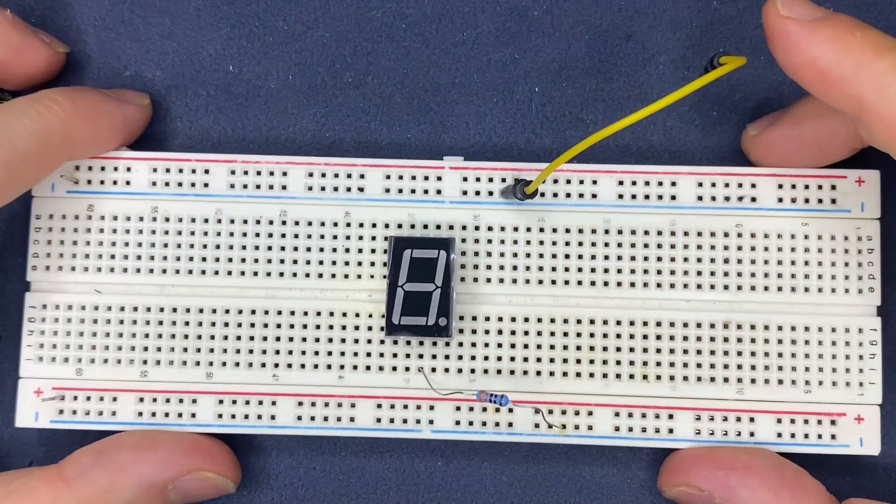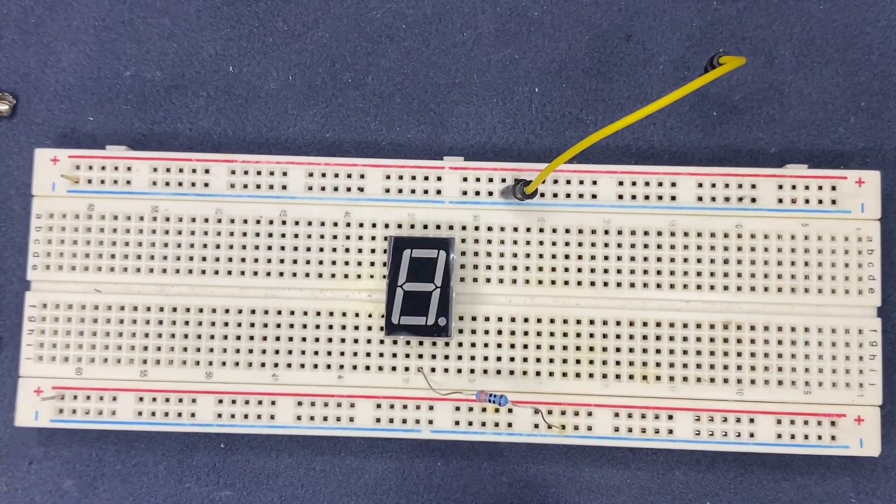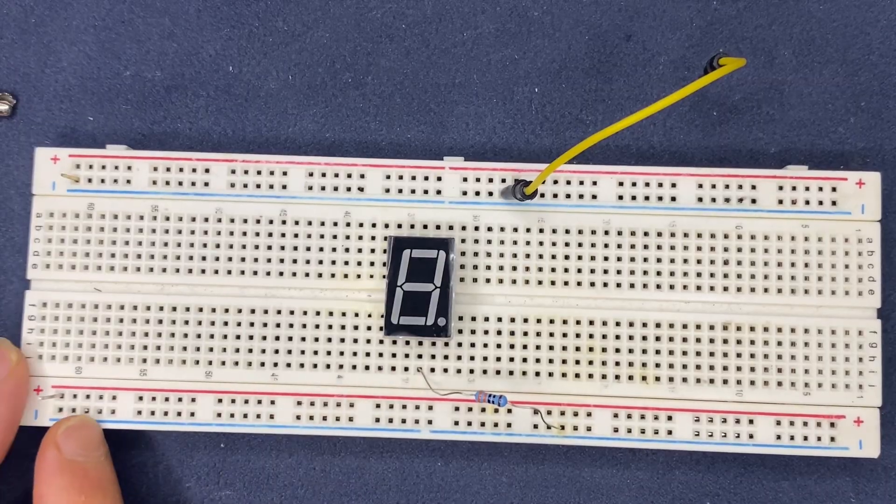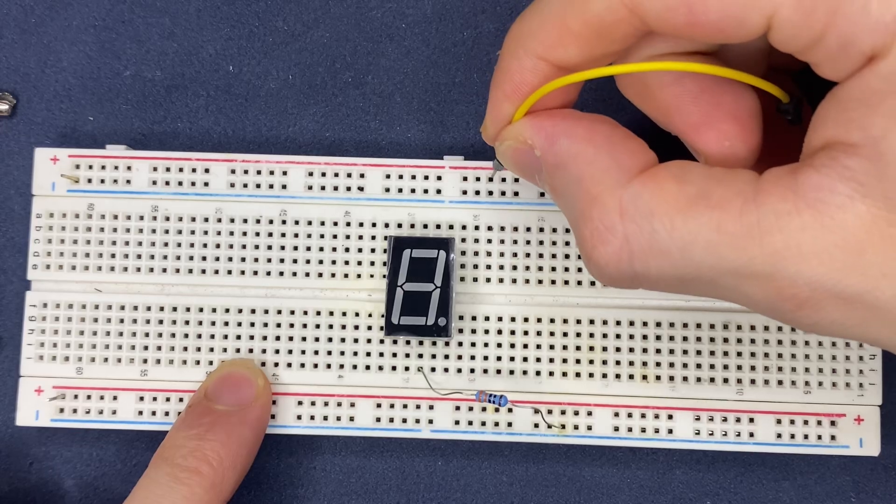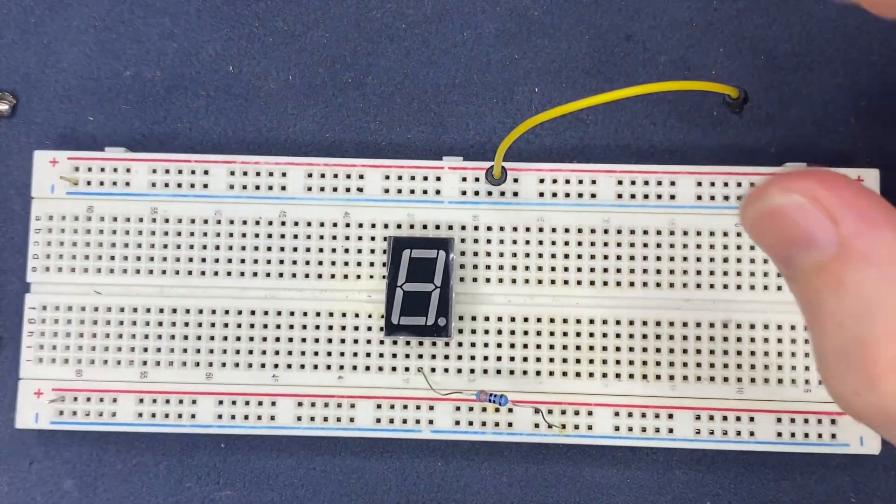We hope that the 7-segment display is common cathode, therefore pin 3 is going to be connected to ground. And the jumper wire now has to be connected to the positive rail of the breadboard.